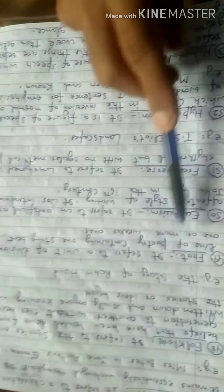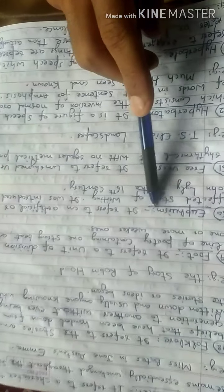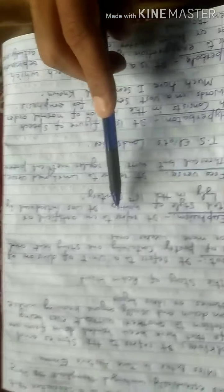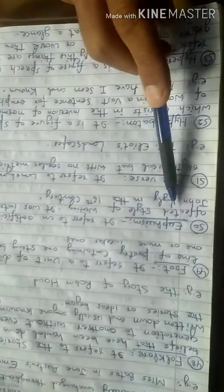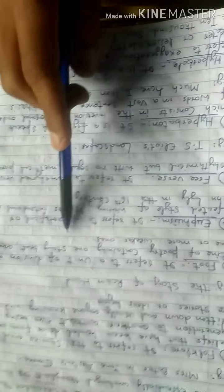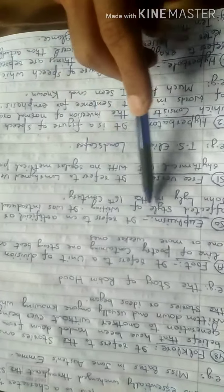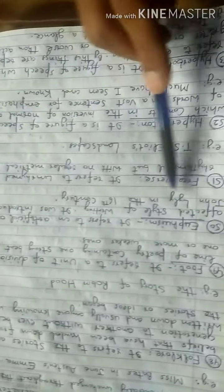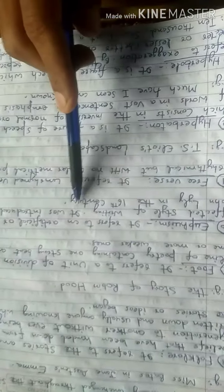The next term is euphuism. It refers to an artificial or affected style of writing, introduced by John Lyly in the 16th century.